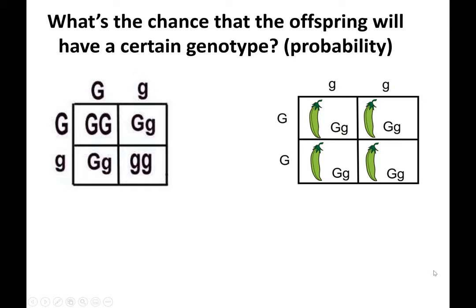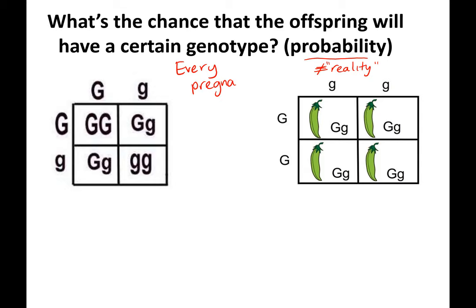Genetics and making a Punnett square is all about predictions — what's the probability that you could have an offspring with certain traits? Remember, probability does not equal reality. Just because you're predicted to have one homozygous recessive child and three children expressing the dominant allele doesn't mean if you have four kids it's going to happen like that. Every pregnancy is a new Punnett square, because every egg or sperm had the chance to make any combination of gametes, so it doesn't carry over.